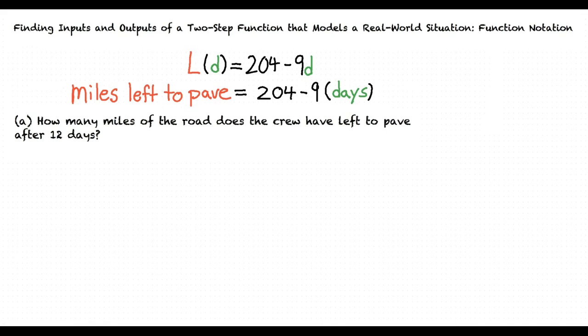Do you have any ideas on what we should do next? Well, since problem A is looking for the amount of miles of road left to pave after 12 days, we plug in 12 into the equation where the variable D is and then solve the equation, right? Exactly. When we input the number 12, our function will look like this. Solving this out, we get a total of 96 miles left to be paved.